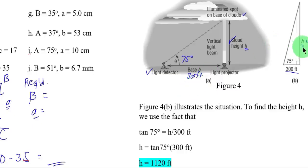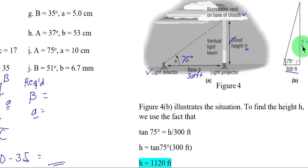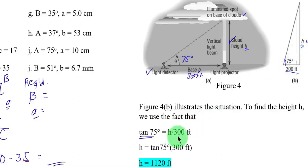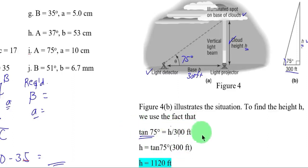Let us solve for H using trigonometric functions. The given here is the adjacent side of the angle, and the unknown H is the opposite side. To relate H with the given, we use tangent: tangent of 75° equals opposite over adjacent, which is H over 300 feet. Solving for H: H equals tangent 75° multiplied by 300 feet, which gives approximately 1,120 feet.